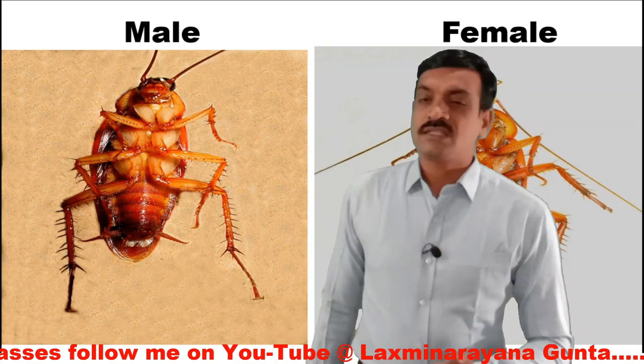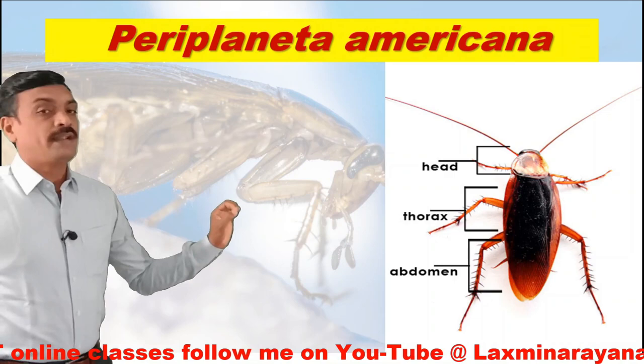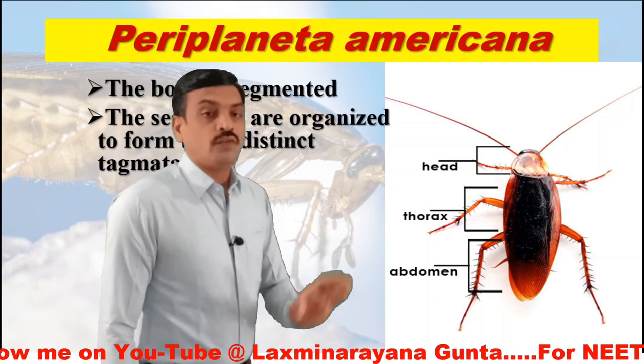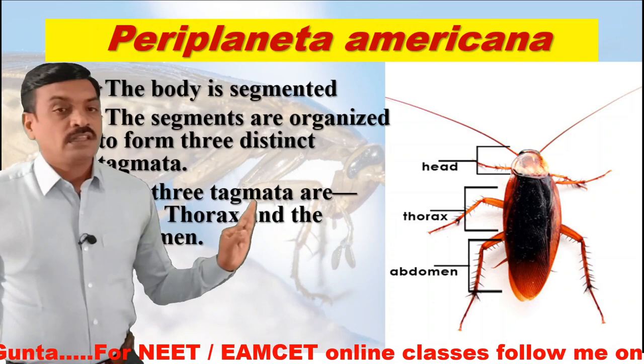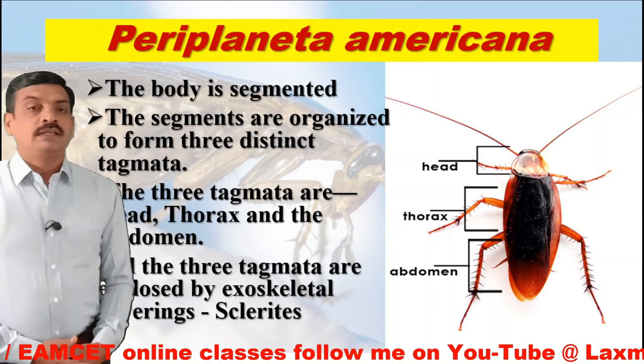They are segmented, and these segments are organized to form three distinct tagmata. These tagmata are the head, thorax, and abdomen. All three tagmata are enclosed by exoskeletal coverings called sclerites.